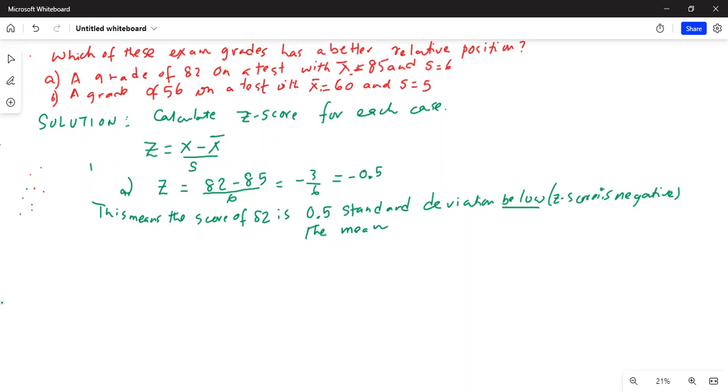Now let's calculate the z-score for the second case. z-score is equal to (x - x̄) / s.